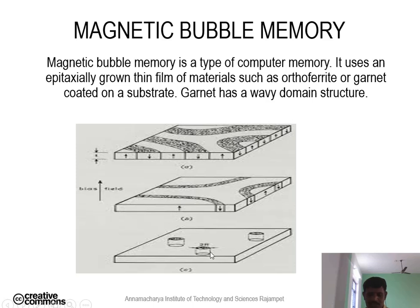These small circular areas are known as magnetic bubbles. The generated magnetic bubbles are stable in a particular applied field region, as shown in the figure. When the field exceeds a particular saturation value, the magnetic domain changes back into magnetic strips and hence the bubble radius decreases. This is the magnetic bubble memory.